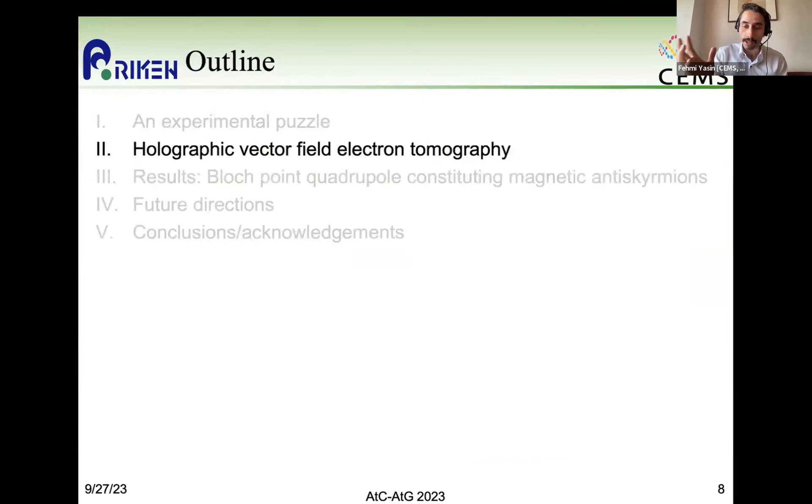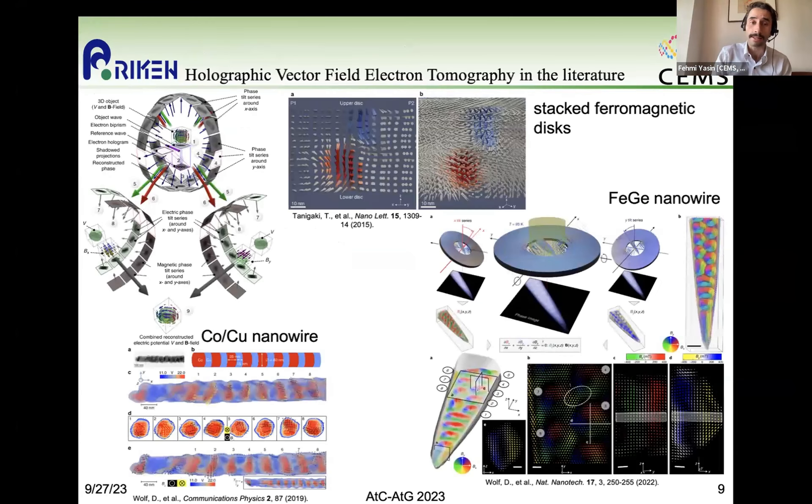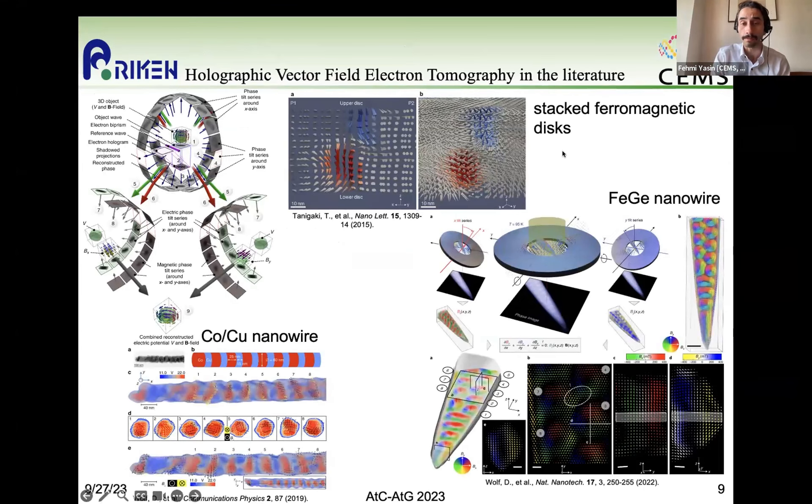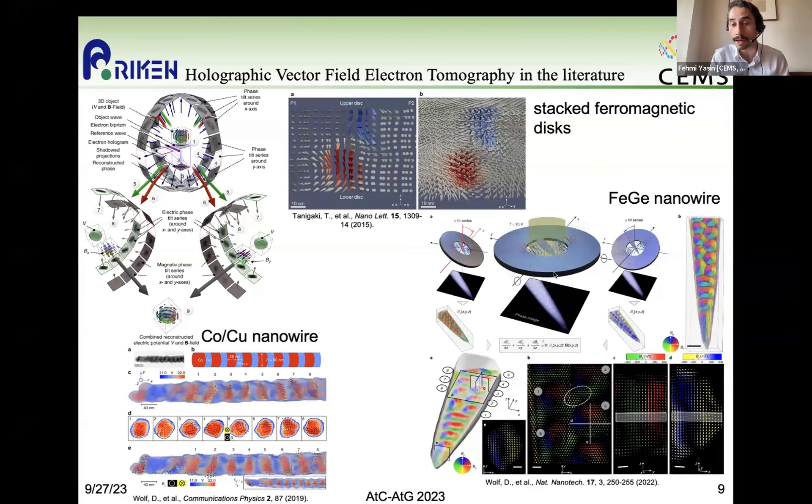So to solve this puzzle, we turn to holographic vector field electron tomography. And this is a well-established technique. You can see here different examples in the literature of it being used. For example, here's some work by my colleague, Toshiaki Tanigaki, who used it to solve the 3D magnetic structure of these magnetic vortices in these stacked ferromagnetic disks. And then it's recently been used in order to solve the string-like structure of confined magnetic skyrmions in iron-germanium nanowires.